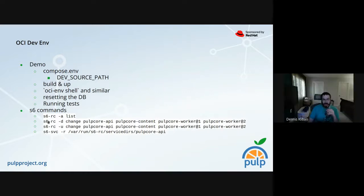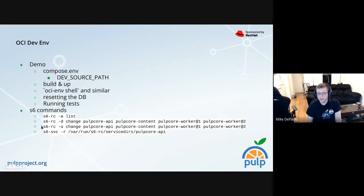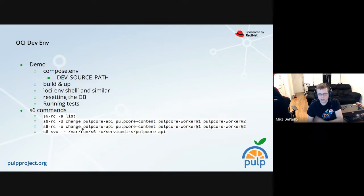When you're in the container you have service management commands. Note that s6-rc is a very lightweight replacement for systemd. The current command to stop all services uses the -d change flag, and to start them back you use -u change. In the future we're going to replace the list of services with a bundle named 'pulp', so instead of listing all four services individually you'll just list 'pulp' — and that will include all scalable worker processes as well.